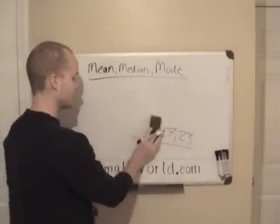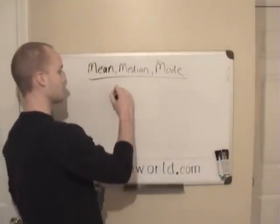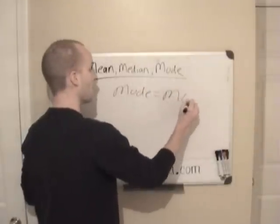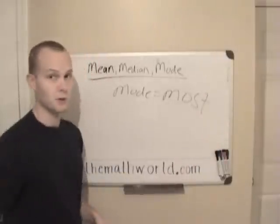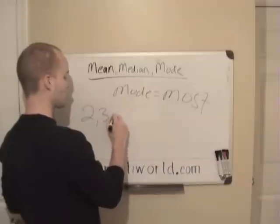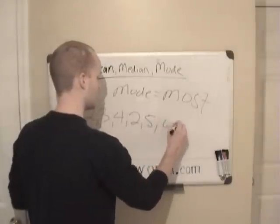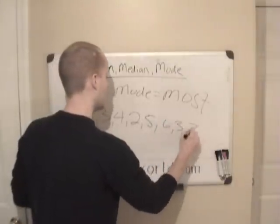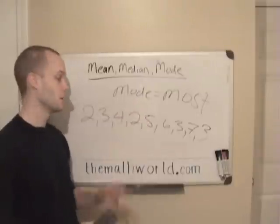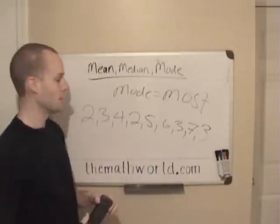The last thing we're going to look at is mode. Anytime you're looking for mode, you're just looking for the most — what number shows up the most. So if they give you a set of numbers like 2, 3, 4, 2, 5, 6, 3, 7, 3, and they ask you what's the mode, you want to look through all these numbers and see what number appears the most.